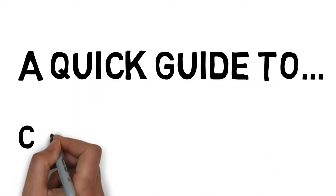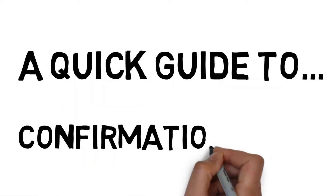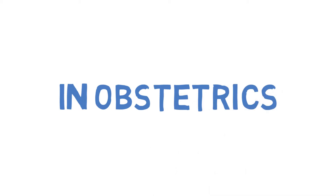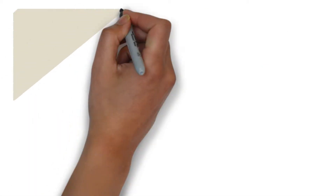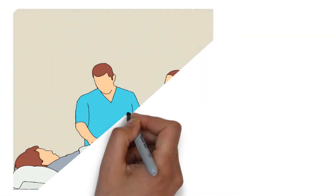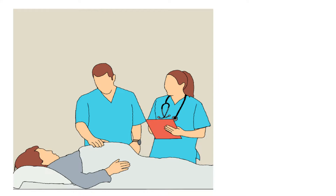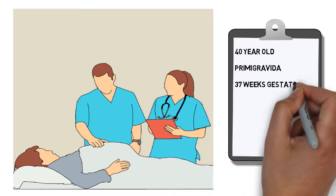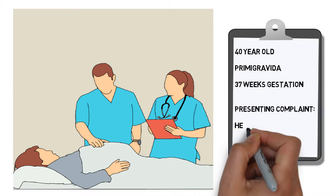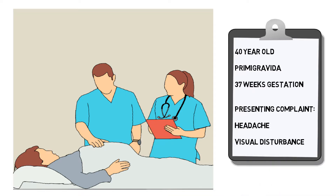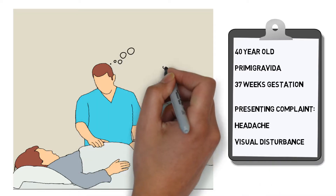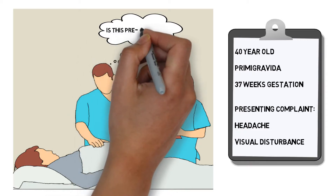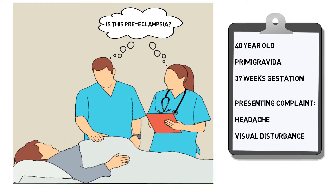A quick guide to confirmation bias. In obstetrics, imagine you are the doctor or midwife working in the maternity assessment unit. A 40 year old primigravida presents at 37 weeks gestation with a history of headache and visual disturbance. What is your diagnosis? Your first thought is probably: is this preeclampsia?